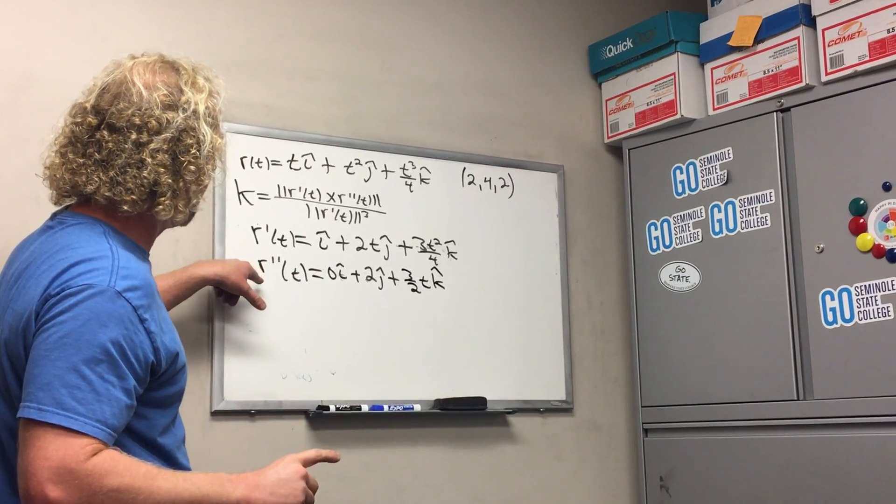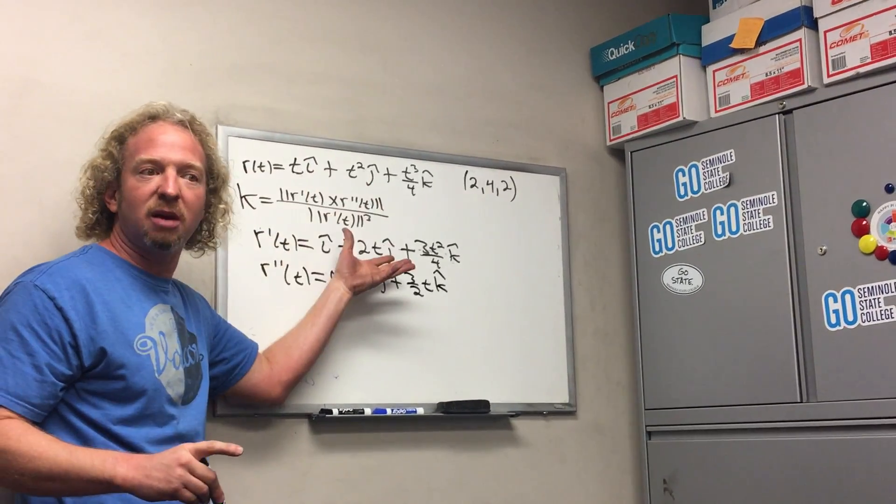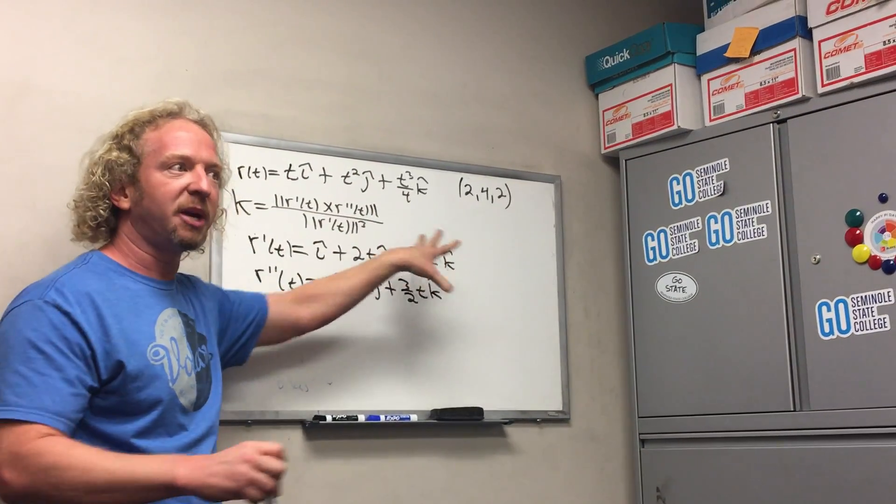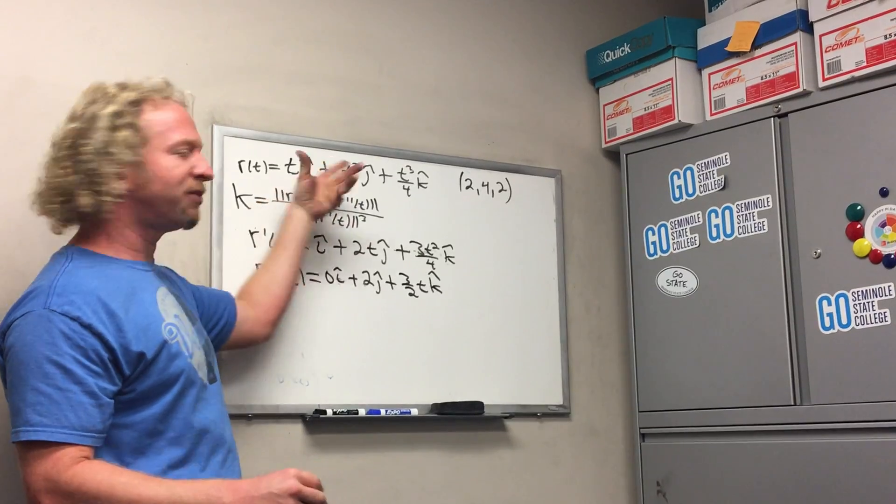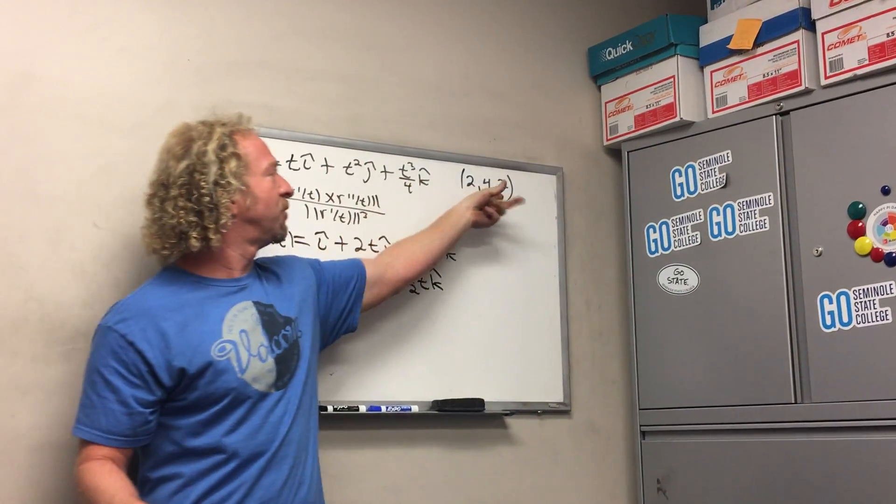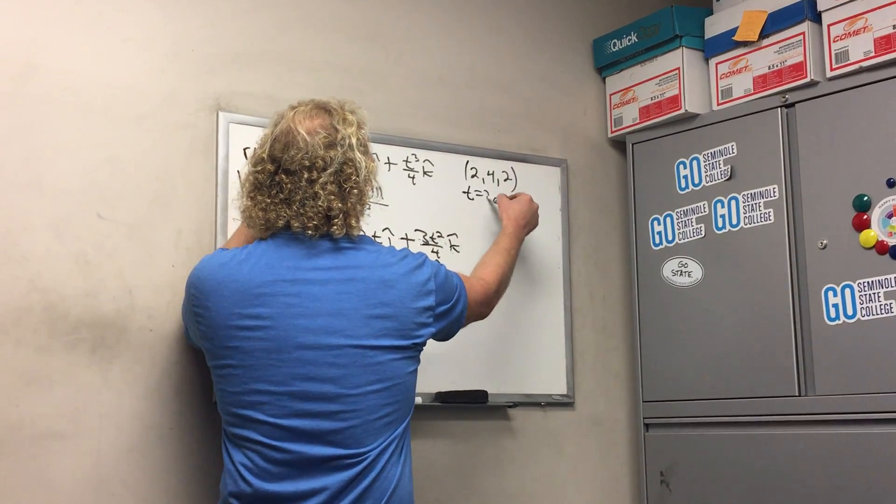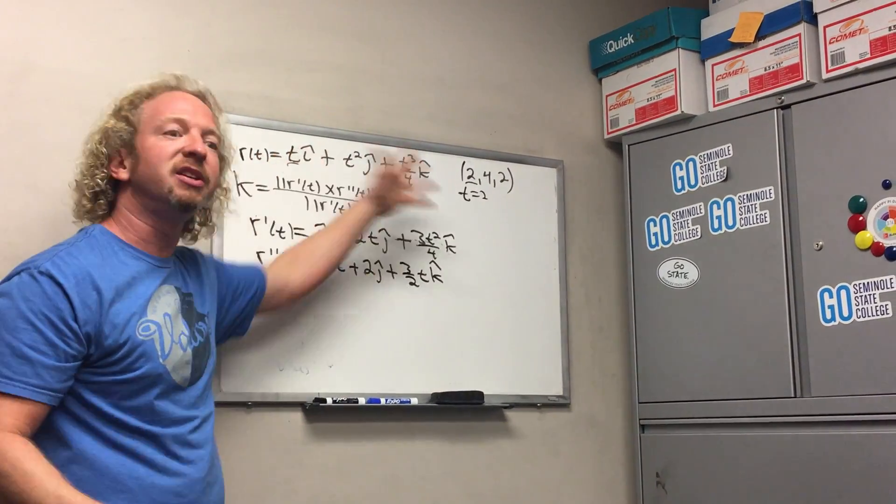So now we're good. Now we can plug in the number. So in this case, how do you get the t? By observation, right? So you have to ask yourself, what value of t can you put here that would give you 2, 4, 2? Well obviously, t has to be 2. These have to match. So t equals 2.